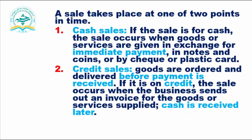A sale takes place at one of two points in time. First, cash sales: if the sale is for cash, the sale occurs when goods or services are given in exchange for immediate payment in notes and coins, or by check or plastic cards. Second, credit sales: goods are ordered and delivered before payment is received. If it is on credit, the sale occurs when the business sends out an invoice for goods and services supplied, and cash is received later.